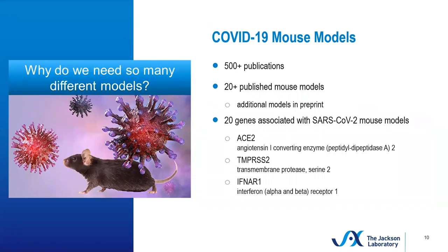So why do we need so many models? If you take a look at the COVID-19 resources that we'll outline towards the end of the webinar, you'll see that over 500 publications have been indexed, which include over 20 published mouse models, additional ones in preprint, and 20 genes that have so far been formally associated with SARS-CoV-2 infection in mouse models. Those include the ACE2 receptor, TMPRSS2 like we mentioned, and also the interferon alpha and beta receptor one.